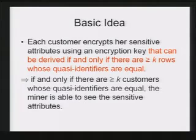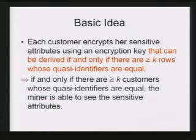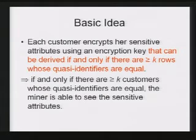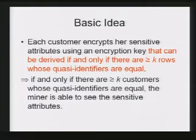The miner can derive the encryption key, and so he can see the sensitive attributes. If he cannot — because the attributes are encrypted — he has no idea what is in them. This below condition is exactly what we want. So now all we need is to build the first sentence: how can each customer encrypt her sensitive attributes in this way? How can we build this kind of key structure such that only if this condition is satisfied can the key be derived?